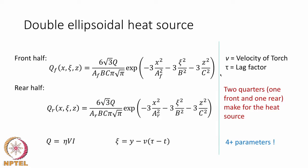The Goldak double ellipsoidal heat source looks like an ellipsoidal function indicated by three squared terms that are added, with a negative sign showing that the heat source attenuates as you move away from the center. There are coefficients that are different from each other, making it ellipsoidal in nature, with four coefficients af, ar, b, and c that tell you how to change the shape depending on the actual welding process.